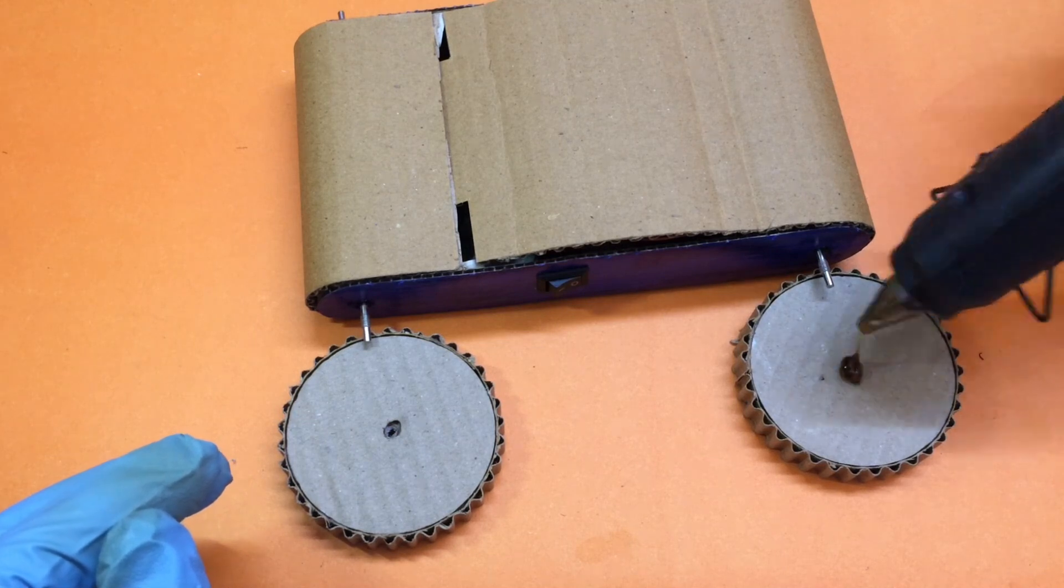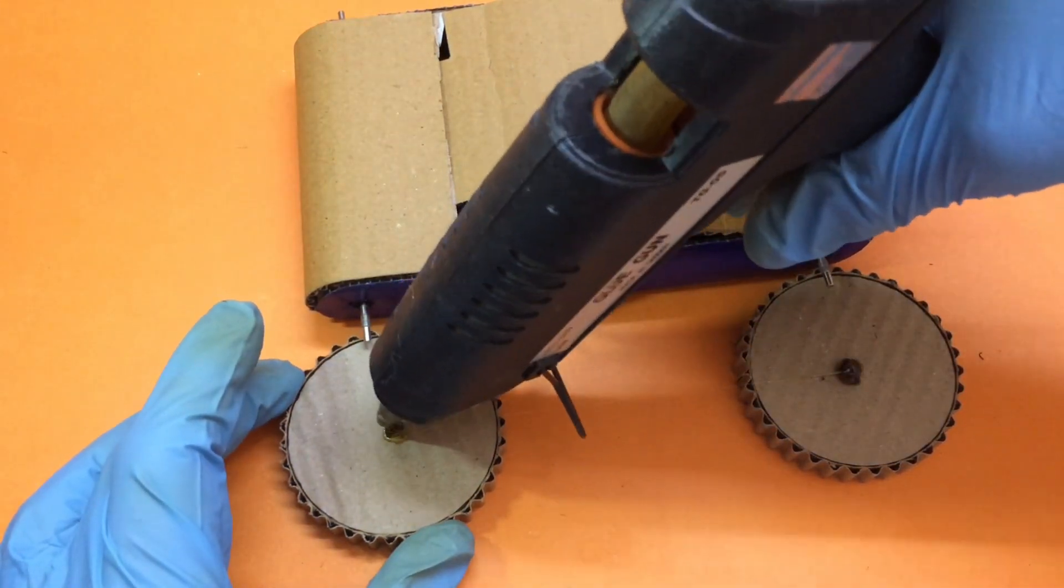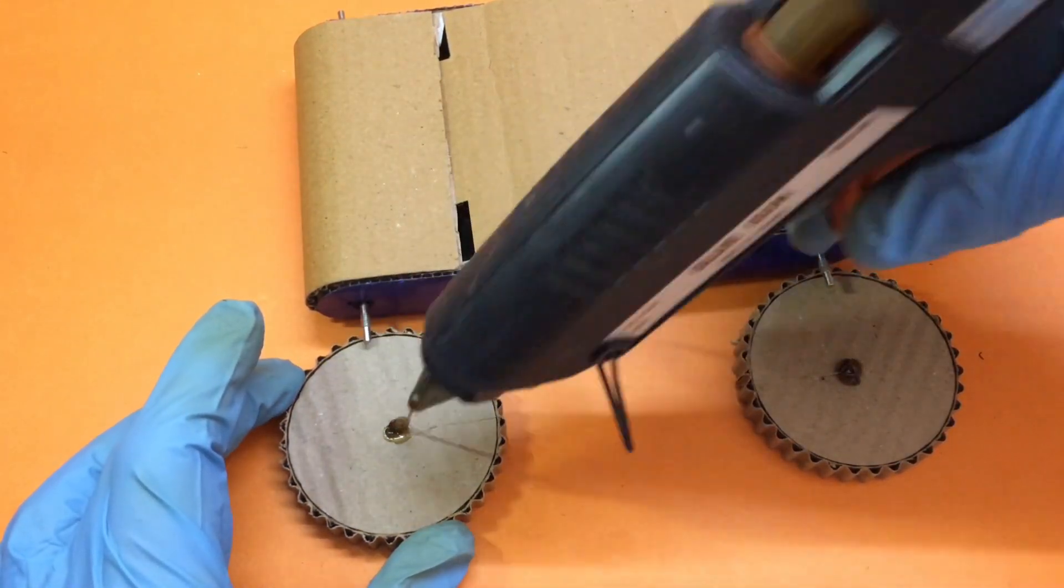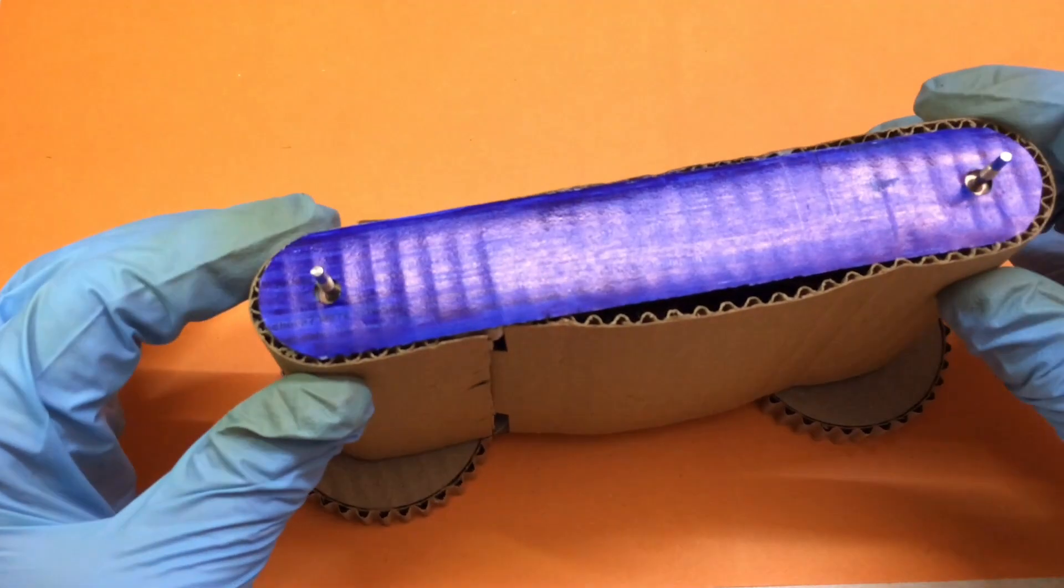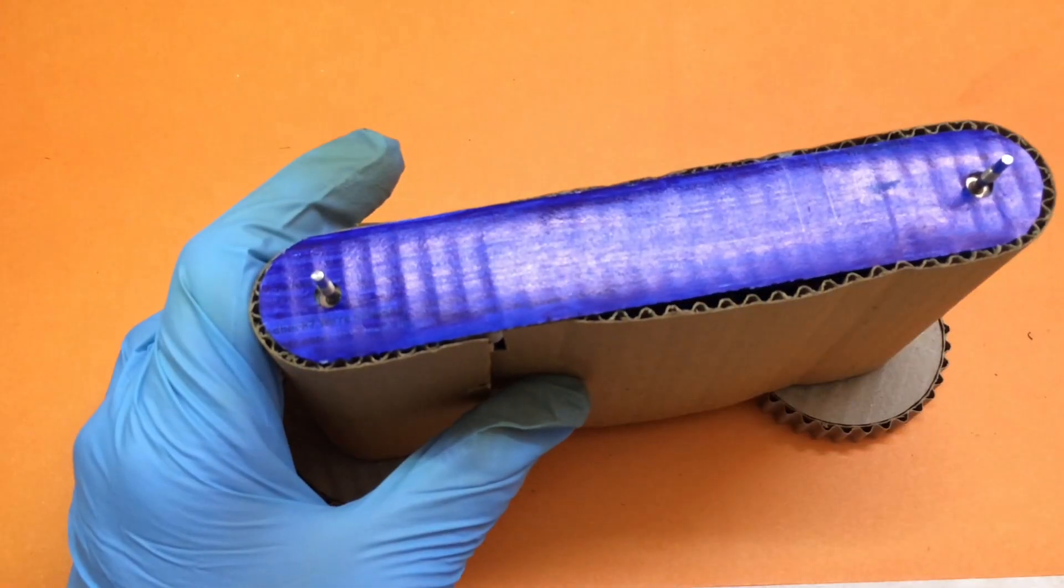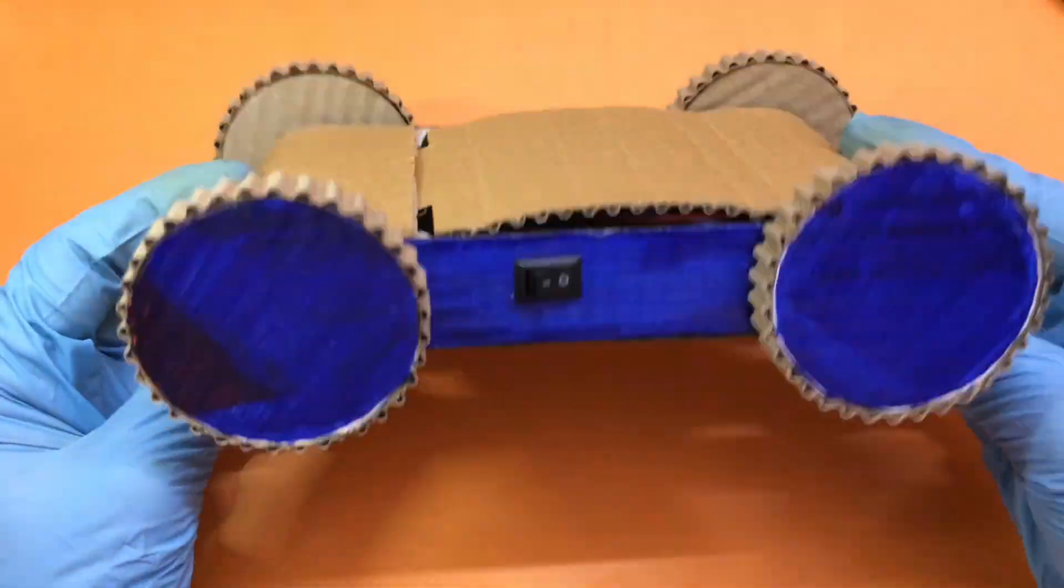Meanwhile our wheels are all dried up and our RC body is ready. So we can attach them together and for that we will be using some glue gun. Just add some glue to the holes of the wheel and insert the motor shaft and hold the body steady till the glue hardens. And then repeat the same for the other side as well.